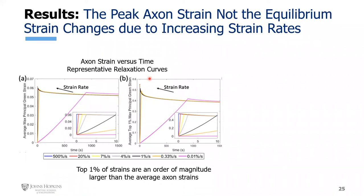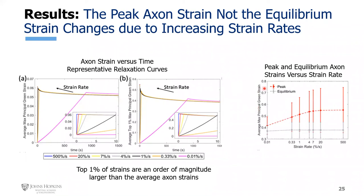Looking at peak strains and equilibrium strains versus strain rate: as strain rate increases, peak strain increases, plateauing around approximately 7% per second. Equilibrium strain values show very little change across strain rates, as expected — when time goes to infinity, many terms in the Prony series go to zero and you're left with only one coefficient, so the equilibrium value is rate-independent.